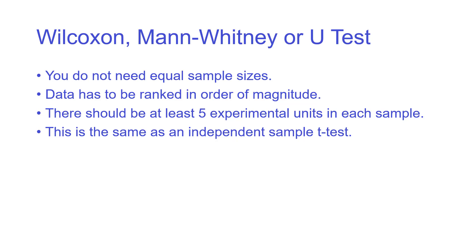You don't need equal size samples of data, although it is a good idea to have them quite similar — you don't want to have collected five from one group and 50 from the other. You need at least five experimental units in each sample. The analogous parametric test is called the independent samples t-test.